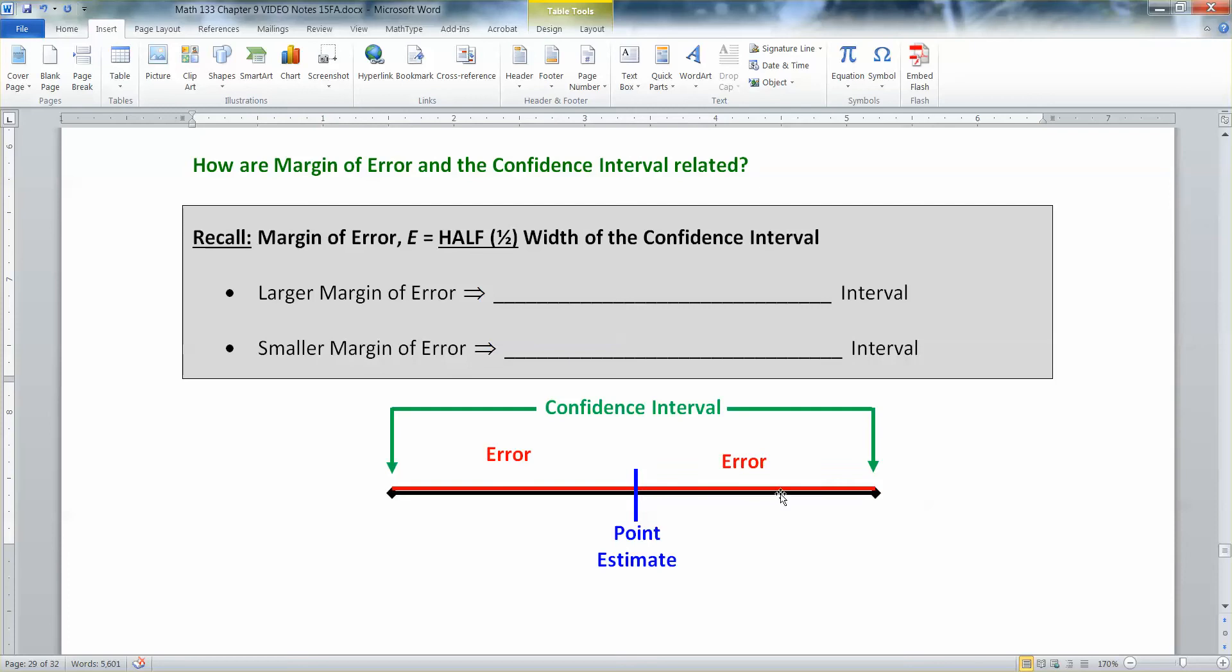So if you have a larger error, if these red bars here get larger, they get longer and stretch out, that's going to mean automatically the green section is also going to stretch out. So the larger error means a larger interval, longer interval, wider interval.